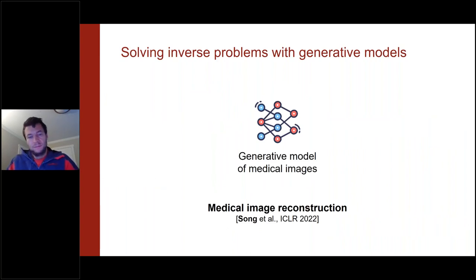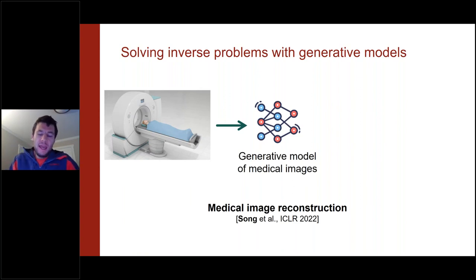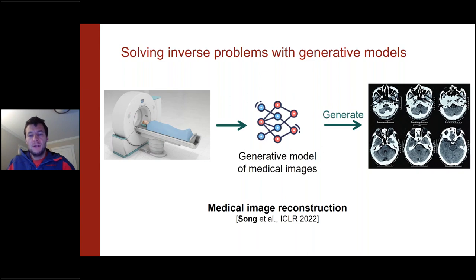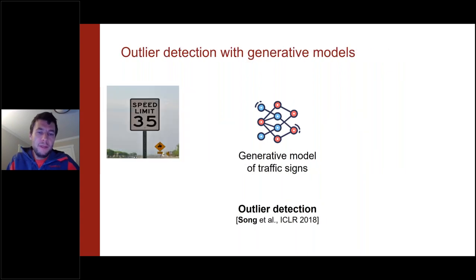There are also medical imaging applications. If you have a generative model of medical images that understands their structure, you can use it to reconstruct medical images from MRI or CT scan measurements. The fact that the model knows what medical images look like can be leveraged to synthesize high-quality images while reducing the amount of radiation and number of measurements taken on a real patient.